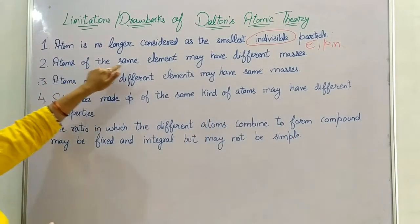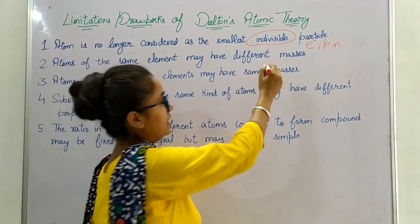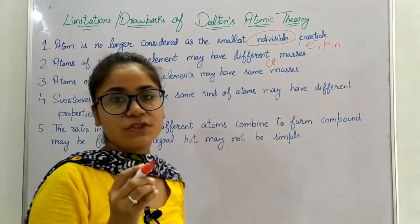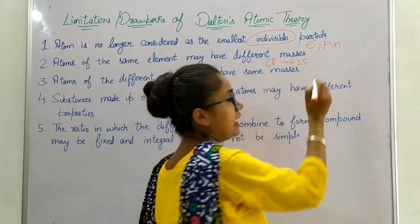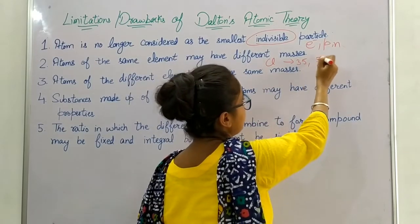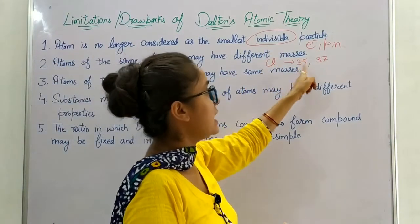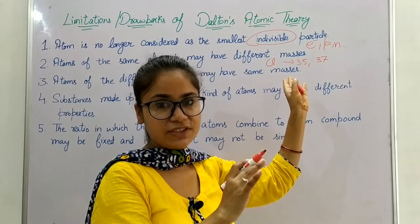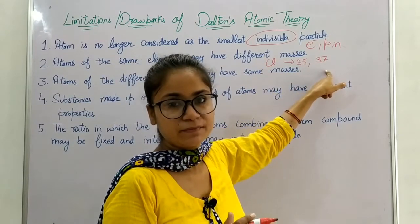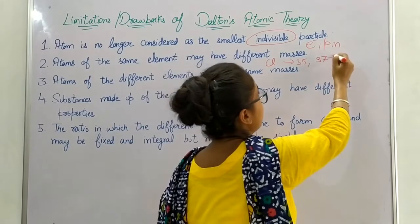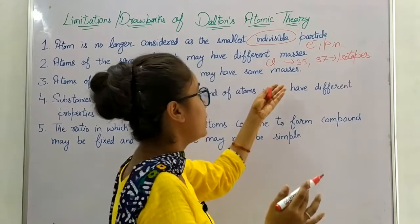The second limitation states that atoms of the same element may have different masses. For example, chlorine has two types of atoms: one with atomic mass 35 and the other with atomic mass 37. Both have the same atomic number of 17 but different mass numbers. These are known as isotopes.